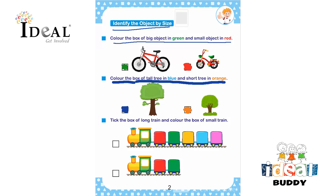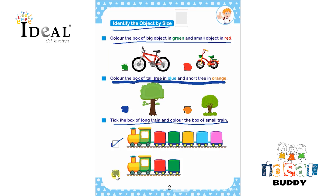After that, the next is tick the box of the long train and color the box of the small train. This is the long train and this is the short train. The child has to tick the box of the long train and color the box of the short train with any color.